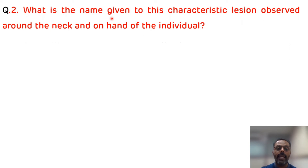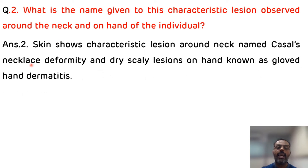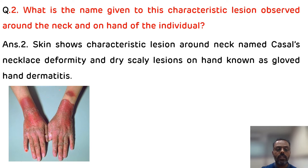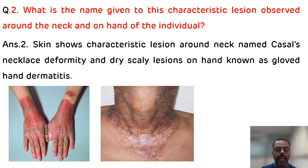The second question is: what is the name given to the characteristic lesion observed around the neck and on the hand of the individual? The characteristic lesion observed around the neck is known as Casal's necklace. The dry itchy erythematous scaly lesions on the hand are known as glove hand dermatitis. This picture shows the dry itchy erythematous skin lesions seen on the dorsum of the hand, and the hyperpigmentation seen around the neck. These erythematous skin lesions have the characteristic feature that they are bilateral and symmetrical.